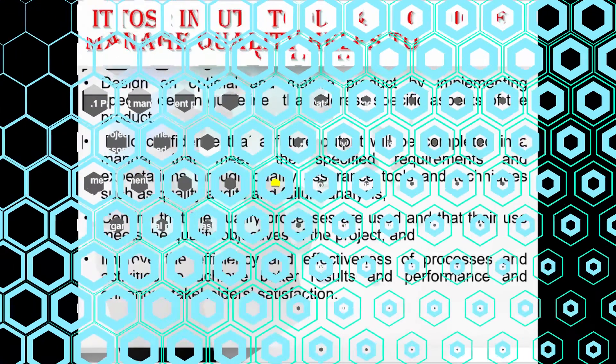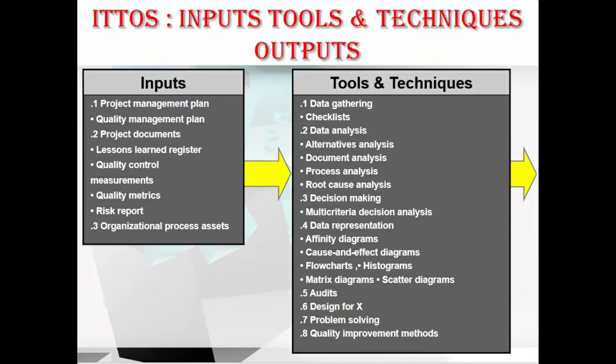Let's move to the ITTOs in more detail — inputs, tools and techniques, and outputs. In inputs, we have the project management plan, which consists of the quality management plan, and project documents which contain the lessons learned register, quality control measurements, quality metrics, and the risk report.